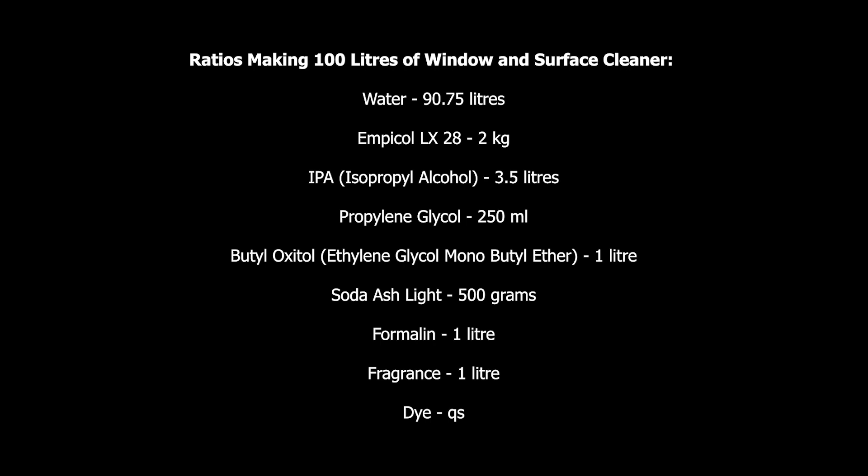Next is isopropyl alcohol at 3.5 liters. Then propylene glycol, which should be 0.25% of the total volume — out of the 100 liters we need 250 ml of propylene glycol.